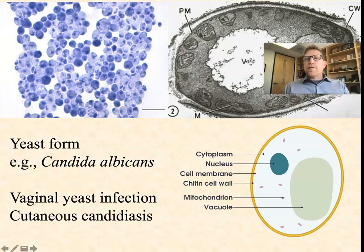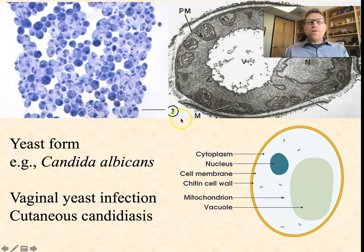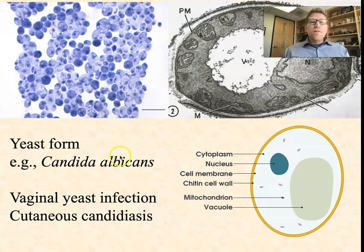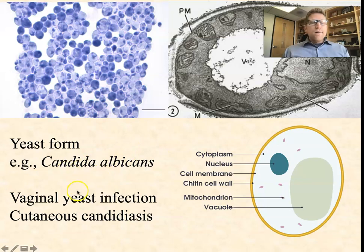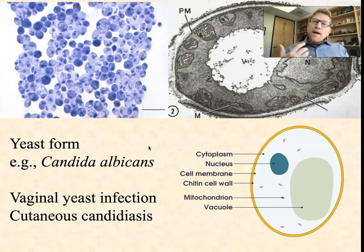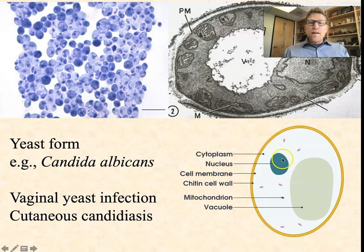When we think about the fungi, yeasts are the single-celled fungi — think brewer's yeast or baker's yeast. One of the more common infectious yeasts is Candida albicans. It can cause vaginal yeast infections, skin yeast infections called cutaneous candidiasis, thrush in the mouth, and sometimes overgrowth of the intestinal tract. These are single-celled eukaryotes, so they're going to have a nucleus and mitochondria, just like any other eukaryote.